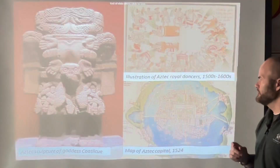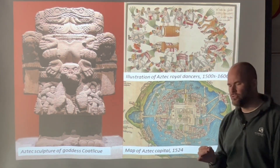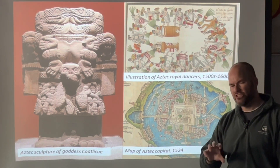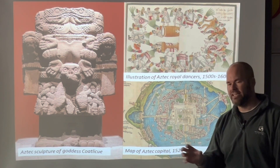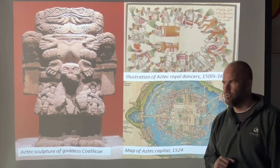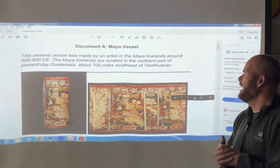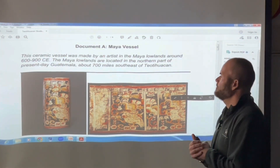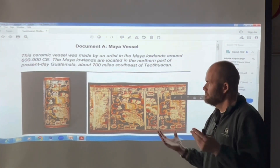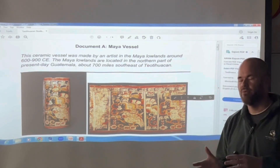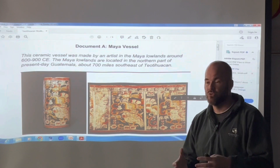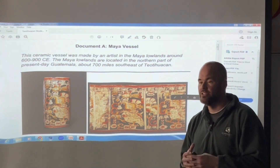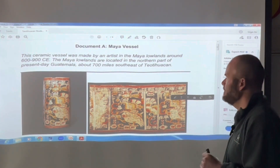As we look at art and architecture from the various civilizations, we want to keep in mind that major question: how likely do I think it is that the civilization of Teotihuacan influenced that of the Aztecs and the Maya? Let's jump into the documents. Document A — we do have some primary source objects here. Keep in mind, a primary source doesn't have to be a written source, although it oftentimes is — that's important to keep in mind.